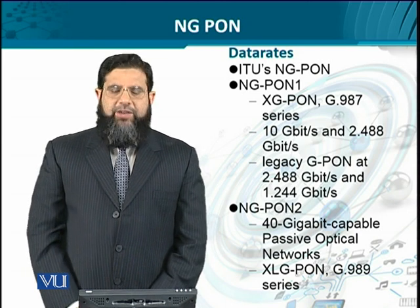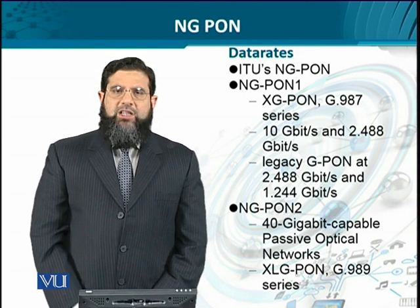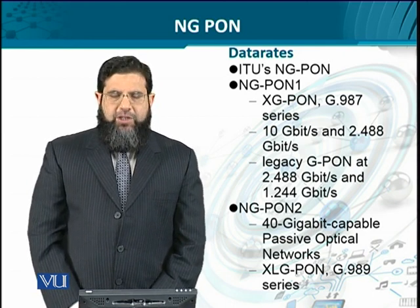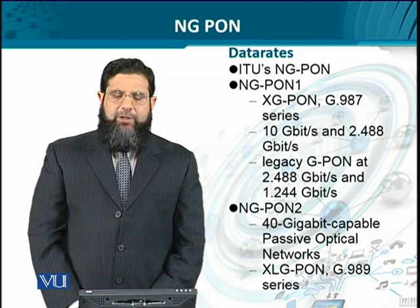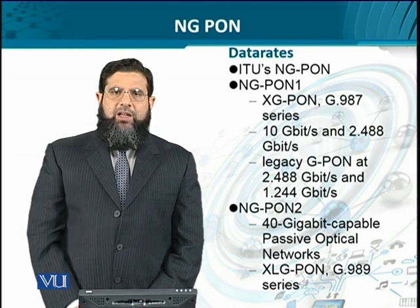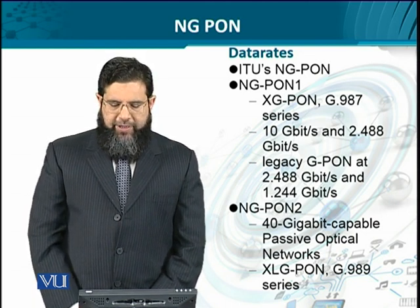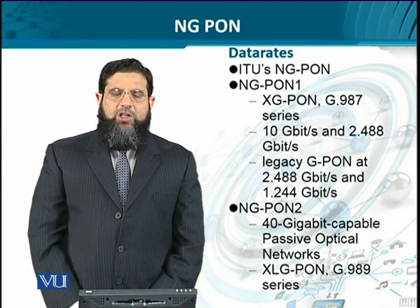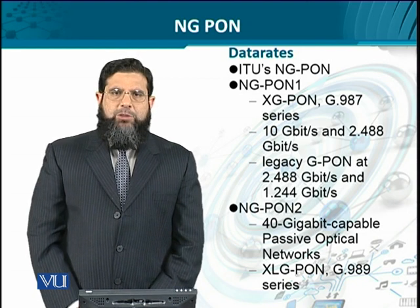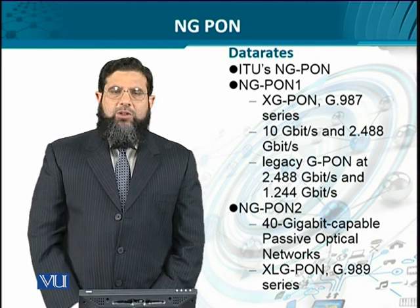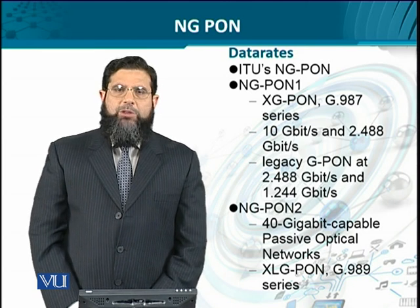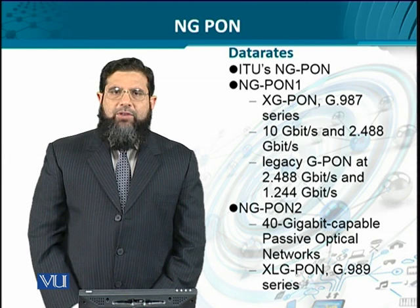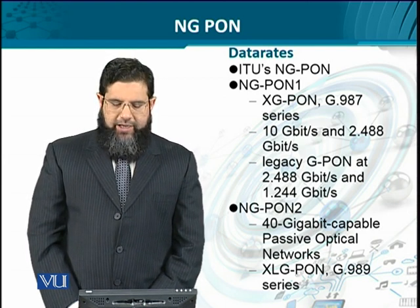The data rates for the next generation passive optical networks as recommended by the ITU are 10 Gbps downstream and 2.48 Gbps upstream. Compare this to the GPONs where the data rate was 2.488 Gbps on the downstream and 1.244 Gbps on the upstream. So we see that they have kept the multiplying factor of 4 intact.